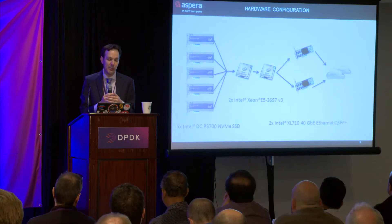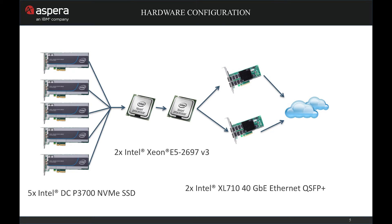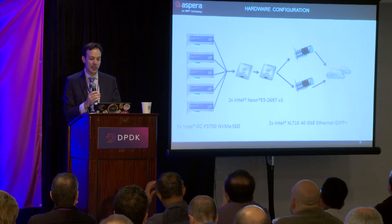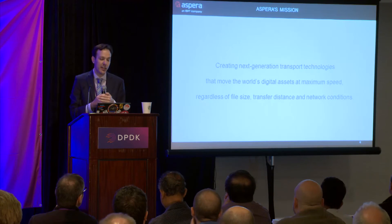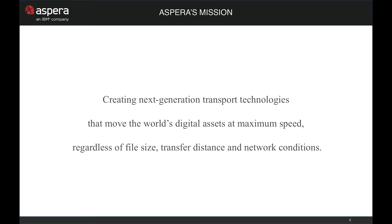To demonstrate this, we worked in conjunction with Intel and built a demo using five Intel NVMe drives connected to a dual-socket Intel Xeon Haswell system along with two 40 gigabit network cards. We tested this solution in three configurations: across the LAN, across the LAN in a memory-to-memory configuration, and finally in a WAN environment between New Orleans and Chicago and back. It fits with Aspera's goal of building the fastest network protocols to move data anywhere in the world at maximum speed.